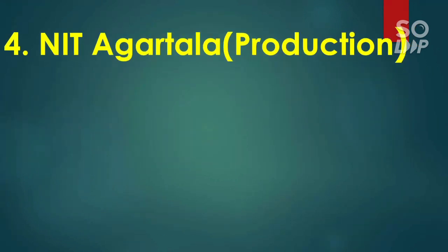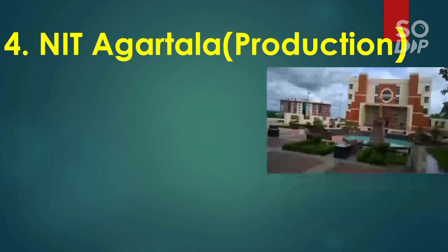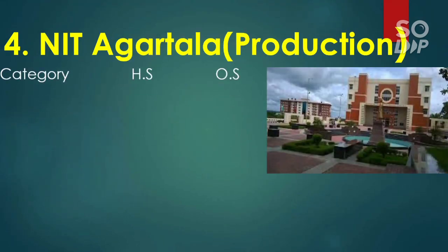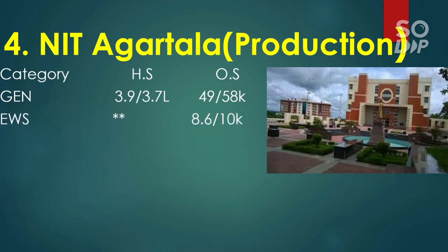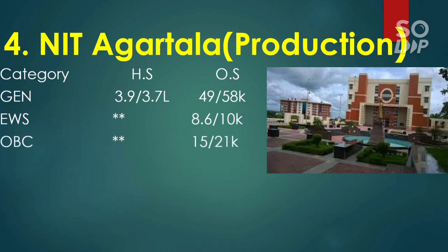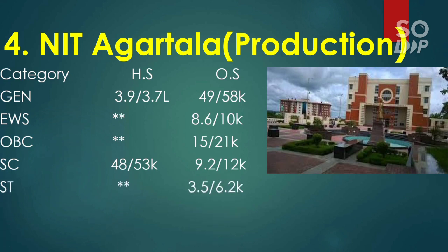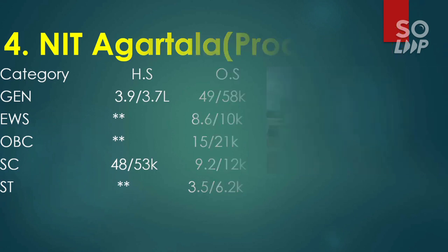The fourth is NIT Agartala, where Production Engineering has the lowest cutoff among all branches. For General other state, it is 49,000 and 58,000 for male and female. For EWS, it is 8,600 and 10,000. For OBC, it is 15,000 and 21,000. For SC, it is 9,200 and 12,000. For ST, it is 3,500 and 6,200.